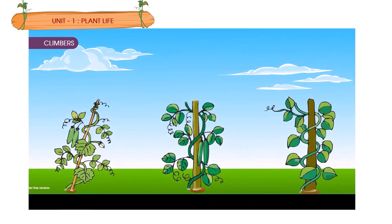Climbers. Some plants have few stems. They are too weak to stand upright. They need a support to stand and grow straight. They take the support of walls, sticks or other plants. Some of the climbers are shown here.